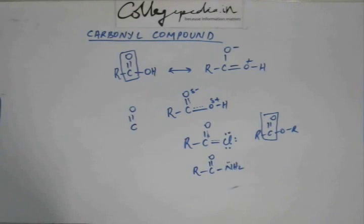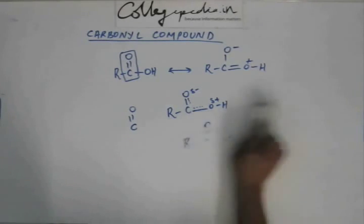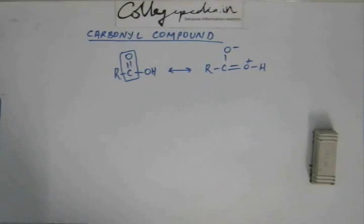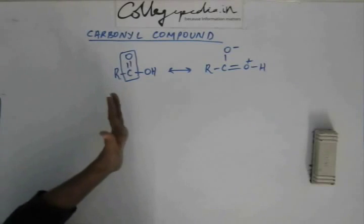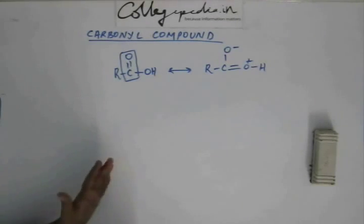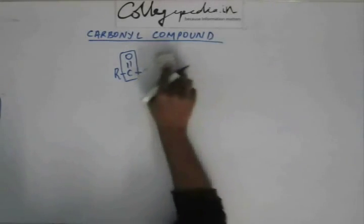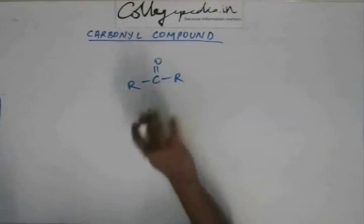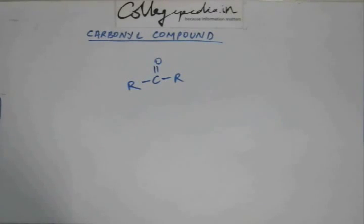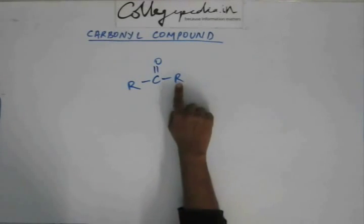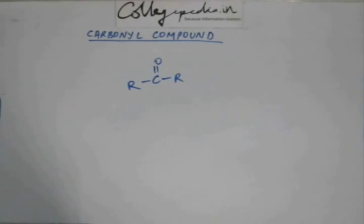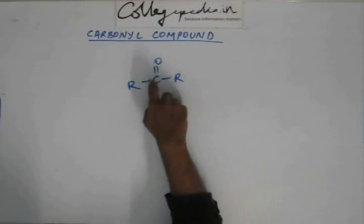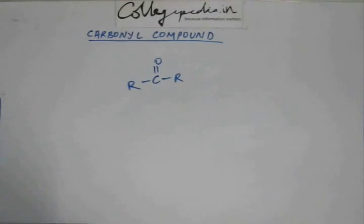Now, because resonance causes no pure C double bond O, if there is no resonance then there may be a pure C double bond O and those compounds would be carbonyl compounds. If instead of oxygen, nitrogen, or chlorine, we have an R group on both sides of the C double bond O — an alkyl group with carbons and hydrogens — that carbon has no lone pair, so there's no resonance and a pure carbonyl group exists. This compound is a carbonyl compound and we call it a ketone.